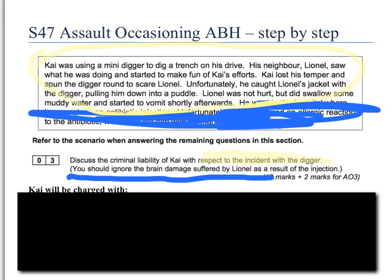So Kai was using a mini digger to dig a trench, and so on — you can read it for yourselves. One of the key things to get right for these questions is to correctly identify the offence first. The example will sometimes give you a bit of leeway — for example, if there's a bruising situation, it could be ABH, but you might also be able to justify battery if it was minor bruising. At the more serious end of the scale, the same issue arises between ABH and GBH. However, it's important to get the right offence. With Section 47 you should be able to decide at the beginning, whereas with Sections 18 and 20, you need to think about the mental element before you can decide which one it is.